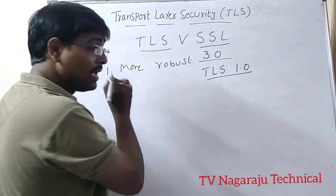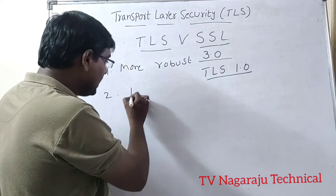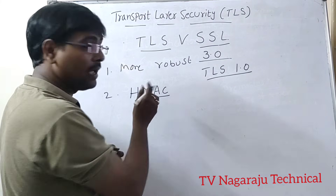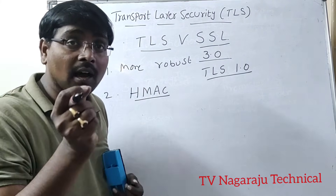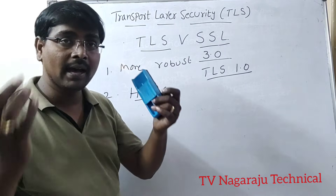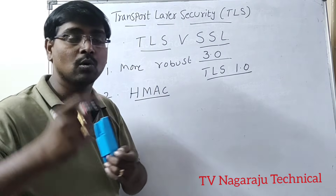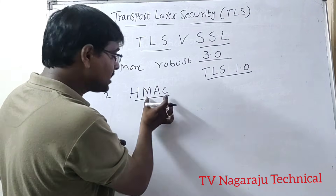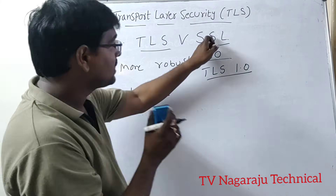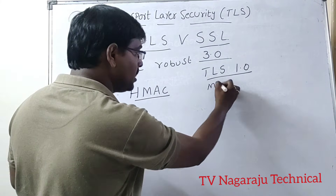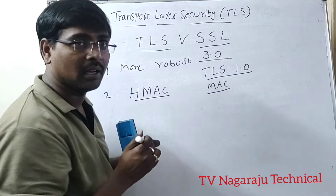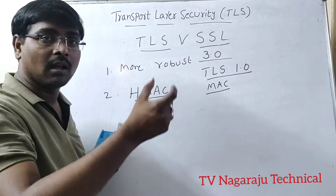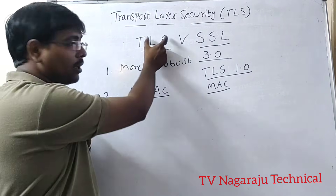Another difference is that TLS uses the HMAC algorithm — Hash-Based Message Authentication Code. Once encrypted, the message authentication code is added to achieve integrity. SSL, on the other hand, uses just a basic message authentication code. HMAC provides a lot more security, which is one of the advantages of TLS.